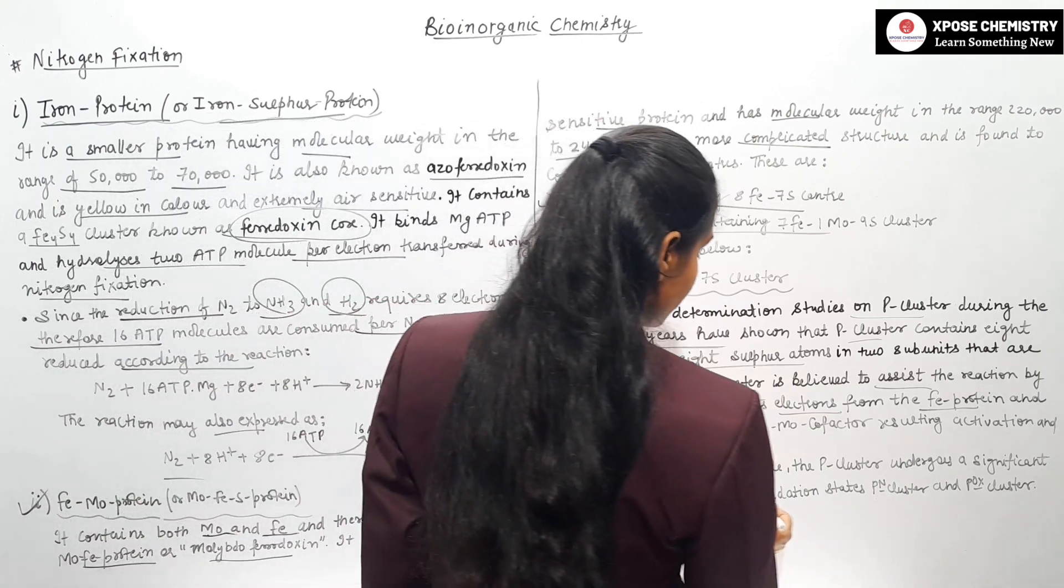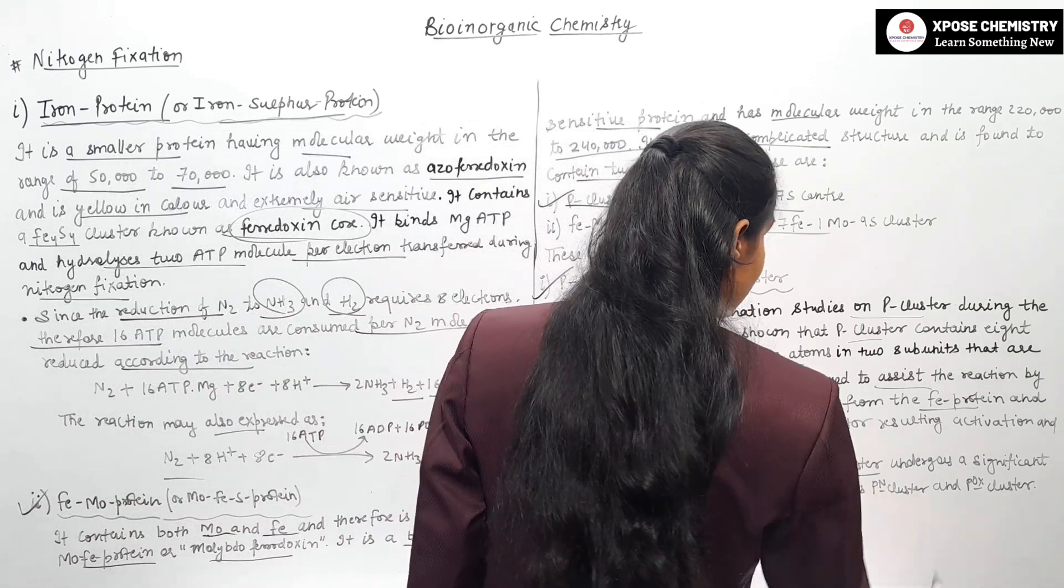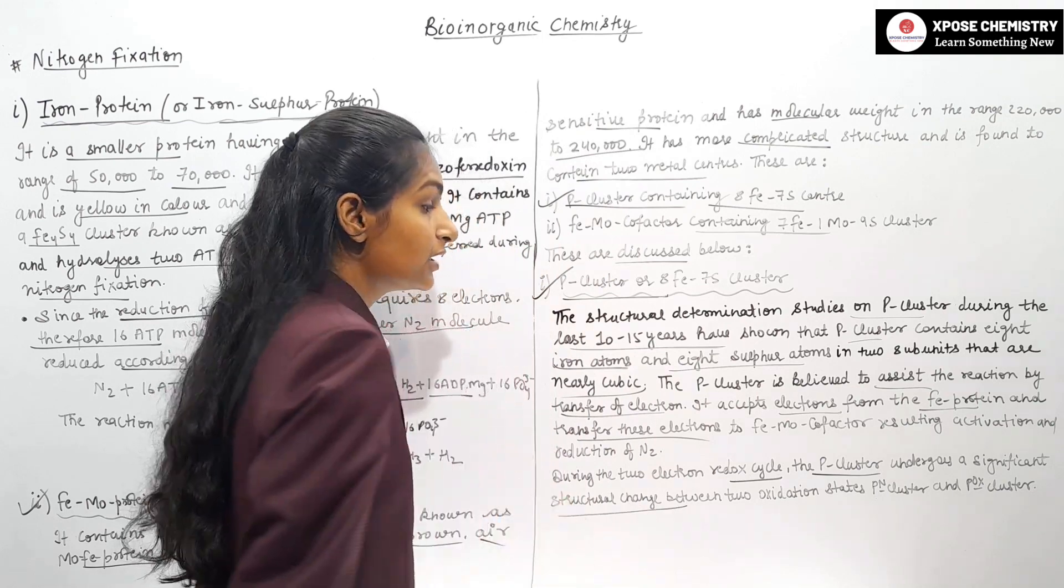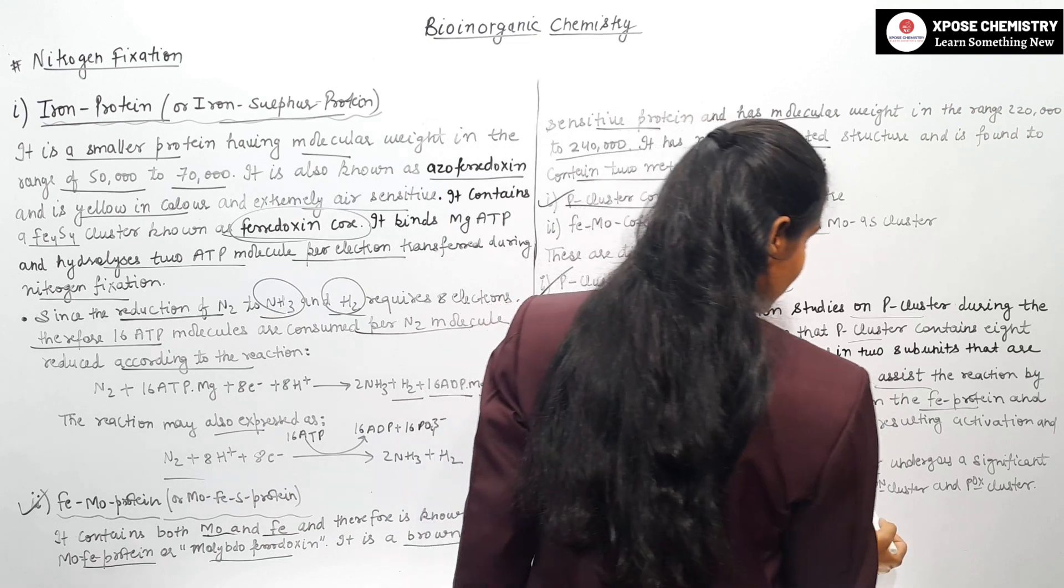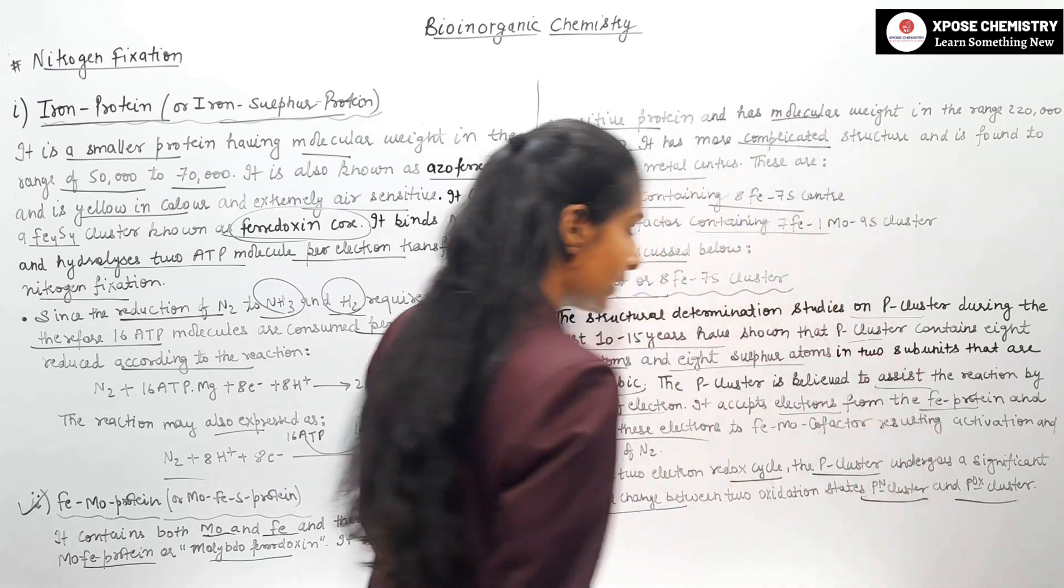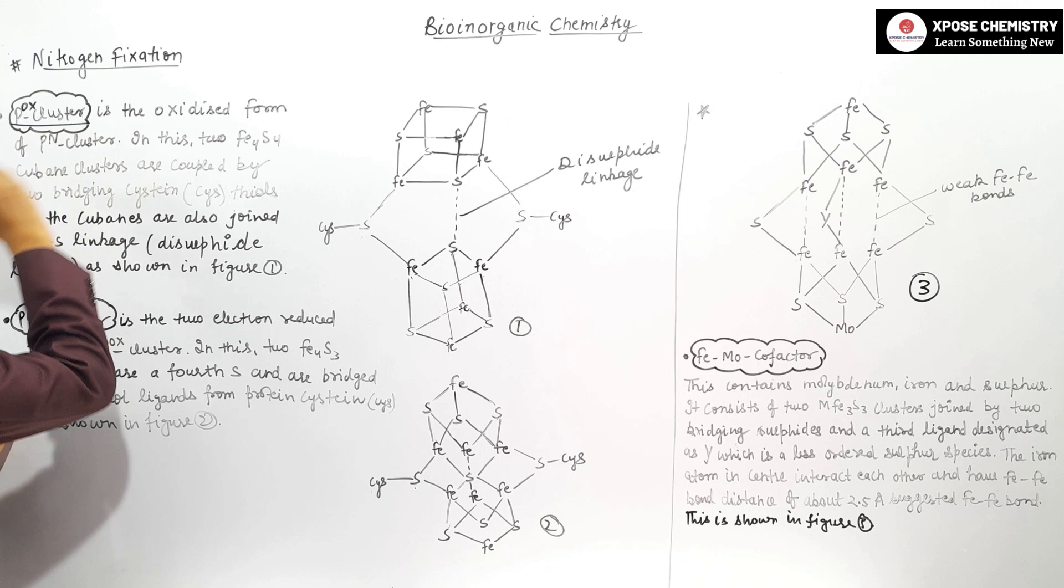During 2-electron redox cycle, the P-cluster undergoes a significant structural change between 2 oxidation states: P-N cluster and P-OX cluster.